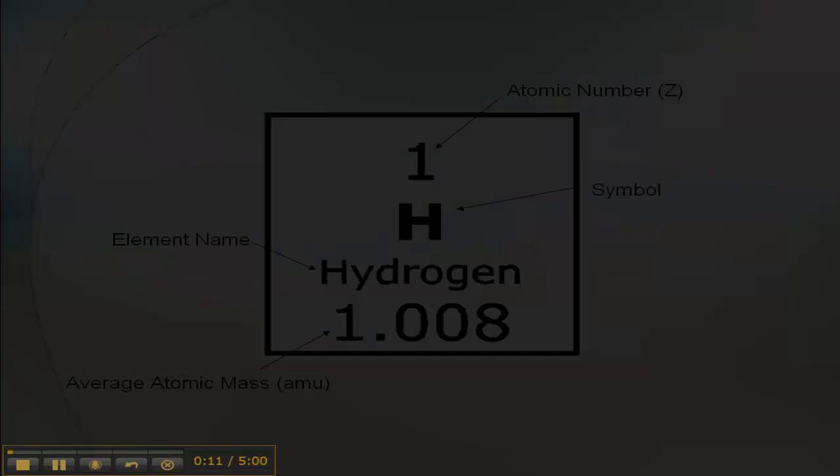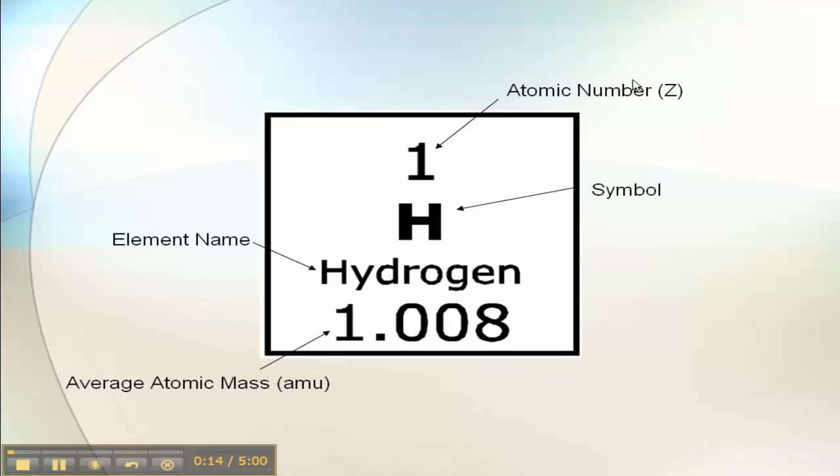So when we look at our periodic table, we see a few things. The number up top, the whole number, is the atomic number. That is Z. Then you've got your symbol, your element name, and your average atomic mass. Now this is not the same as A, which is mass number, so keep that in mind.